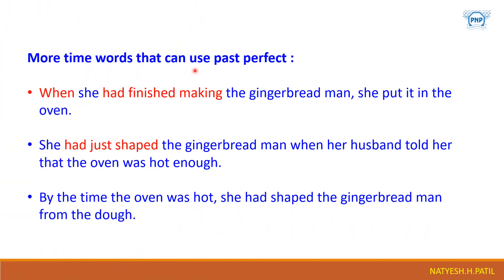There are more time words that can be used with the past perfect. For example: "When she had finished making the gingerbread man, she put it in the oven." Another example with 'just': "She had just shaped the gingerbread man when her husband told her that the oven was hot enough." 'By the time' is also a time word — for example: "By the time the oven was hot, she had shaped the gingerbread man."